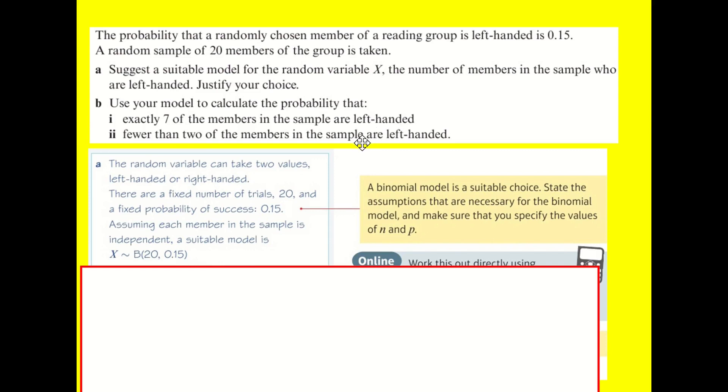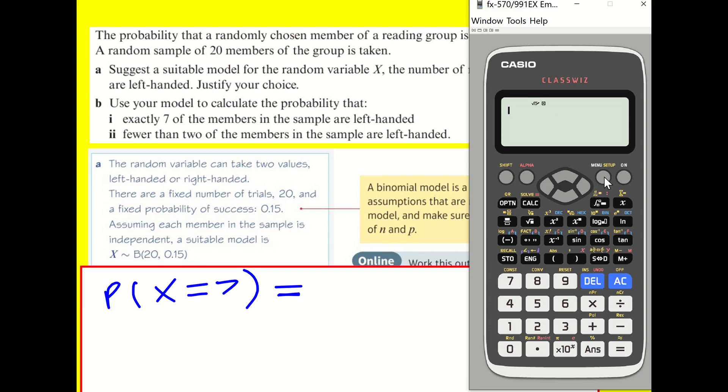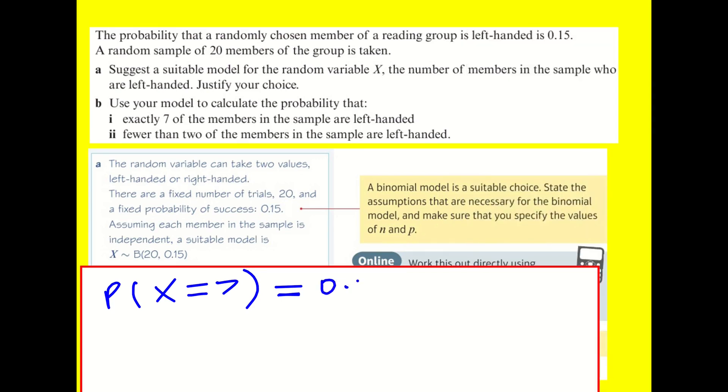Then part B, using your model to calculate the probability that exactly seven are left-handed. For this, it's going to be the probability that X equals seven. And what I can do is I can just get my calculator. You could go back to your old school factorial formula, but at this point, we know it, we're just going to go for the calculator option. Binomial PD, variable X is equal to seven. There are 20 trials. Probability of success is 0.15. And we get 0.0160. That was part B part one.